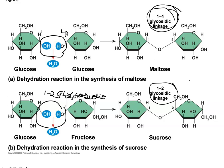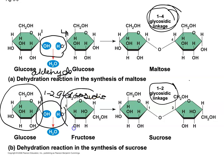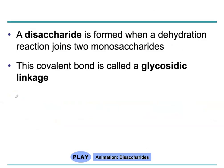Glucose forms a 6-membered ring because its linear form has an aldehyde. Fructose has the same formula, C6H12O6, but forms a 5-membered ring because in its linear form it has a ketone. A ketone is a double bond with oxygen that is non-terminal, whereas an aldehyde is a double bond with oxygen that is terminal.